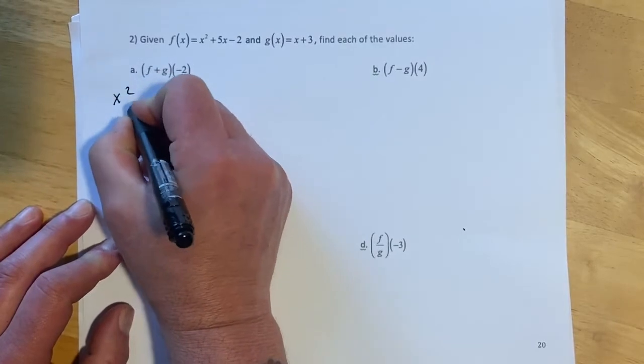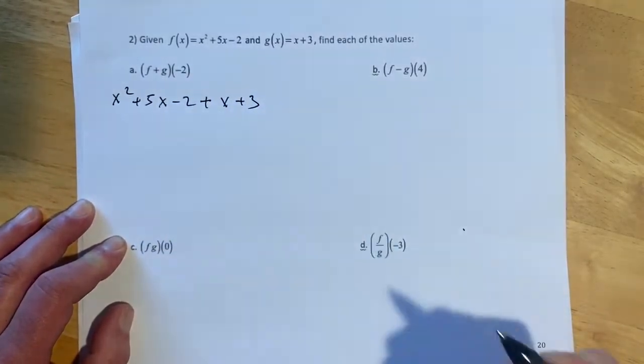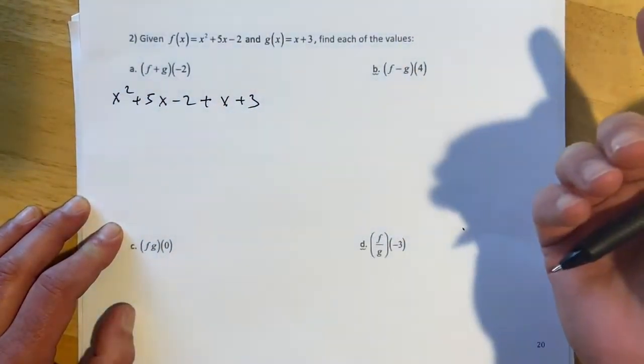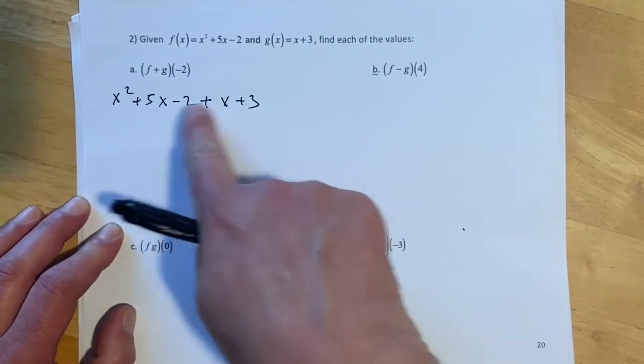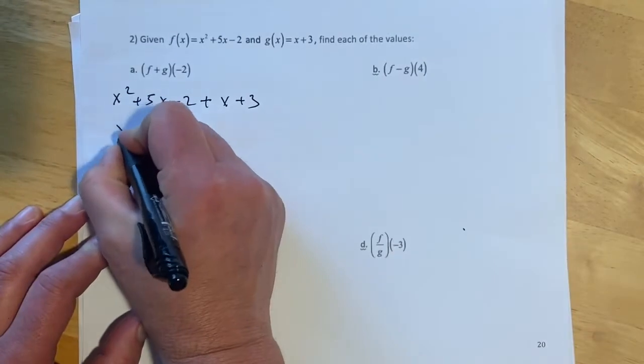Let me write this out just to make it bigger. So if I have that, I can plug the negative 2 in right now, and I would get an answer. Or I can collect my terms first and plug negative 2 in, and I will get the exact same answer. So I'm going to do that.